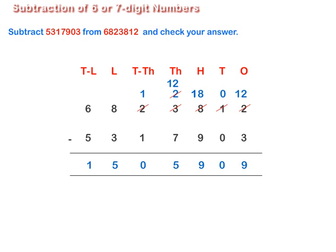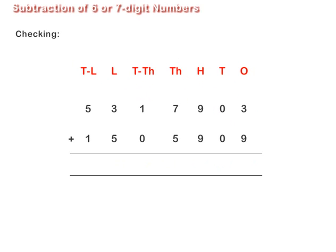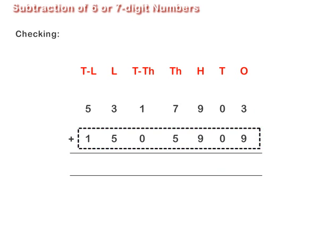On subtracting, we get 15,05,909. To check the answer, add the difference, i.e. 15,05,909, and the subtrahend, i.e.